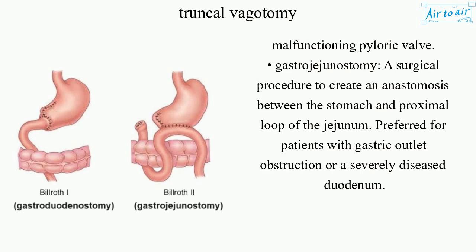Gastrojejunostomy: a surgical procedure to create an anastomosis between the stomach and proximal loop of the jejunum. Preferred for patients with gastric outlet obstruction or a severely diseased duodenum.